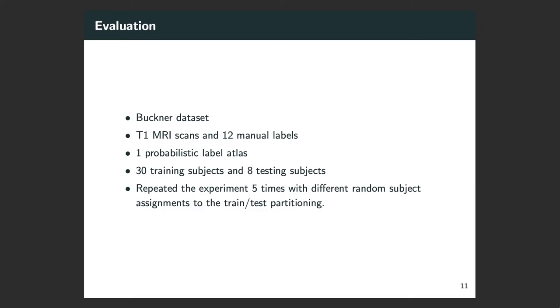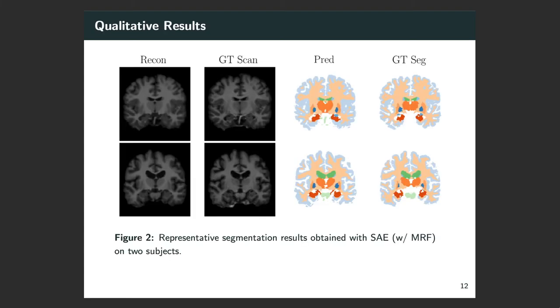We evaluated our algorithm on the Buckner dataset, which consists of T1-weighted MRI scans and 12 regions of interest. In total, we have 38 subjects, 30 of which were used for training, 8 for testing. Although we call it training and testing, our model did not have access to the segmentation during training as we were proposing an unsupervised paradigm. We only used the prior, which is a probabilistic atlas. We repeated the experiment five times with different random subject assignments to training and testing.